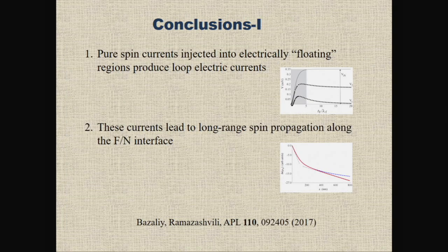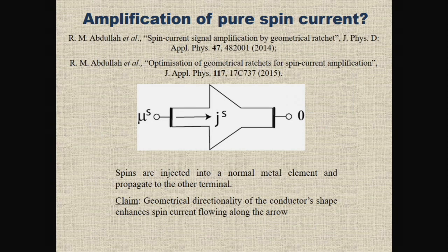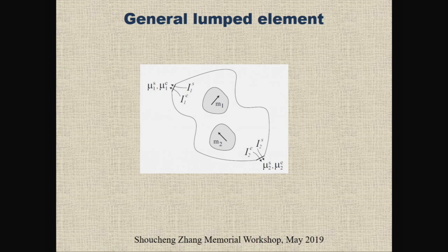The second part is another example. Spin current does not propagate very far, so any spintronic device must be small enough to use the spin current before it decays. There were suggestions that you could propagate spin current further, or even enhance it, by giving a normal metal element a directional shape — in the form of an arrow — so that spin current injected from the wide end propagates better than from the narrow end. This looked really strange and intriguing.